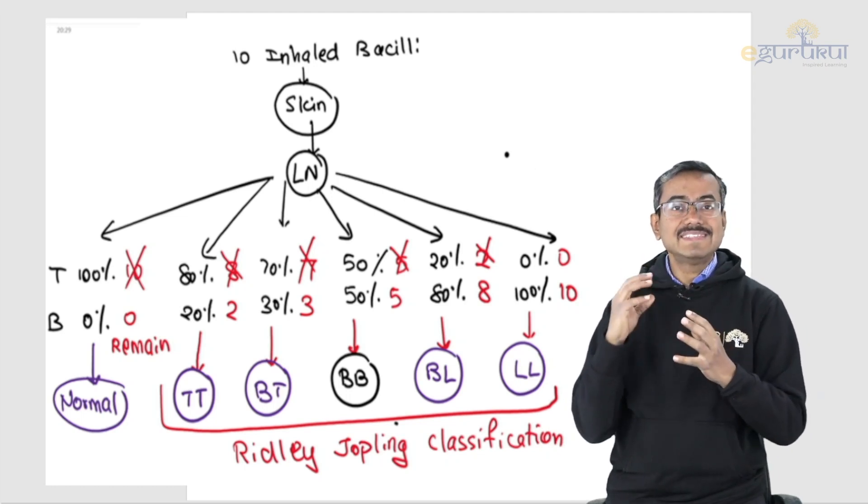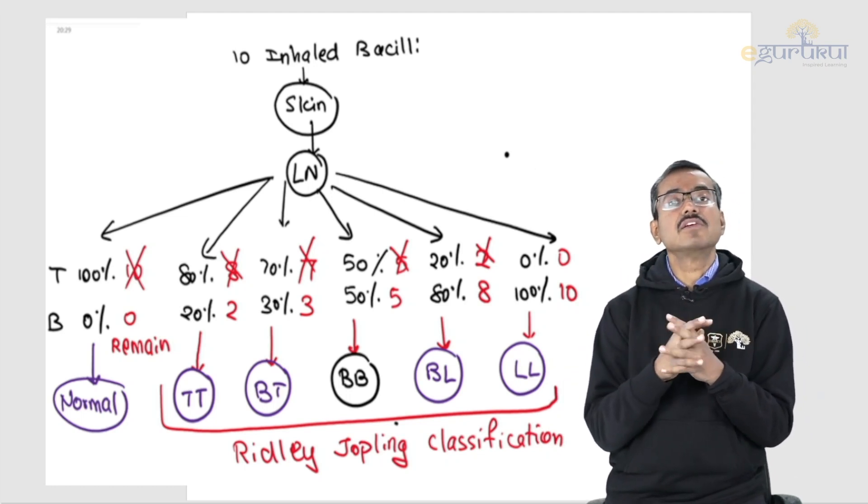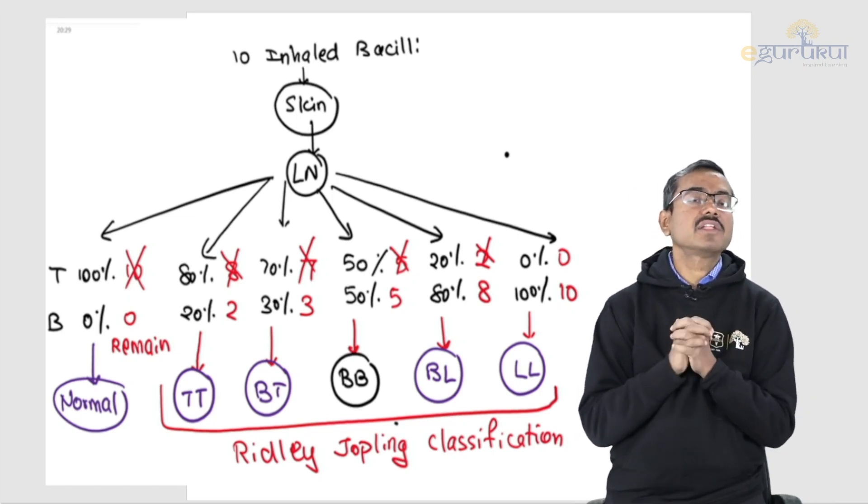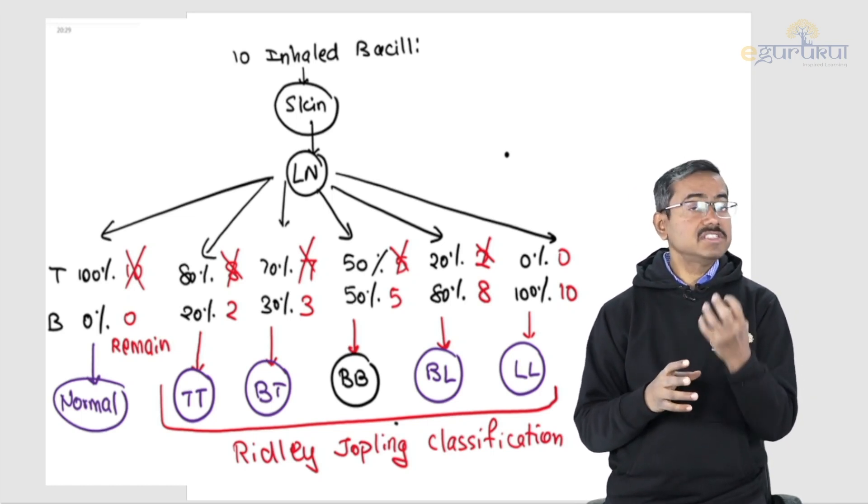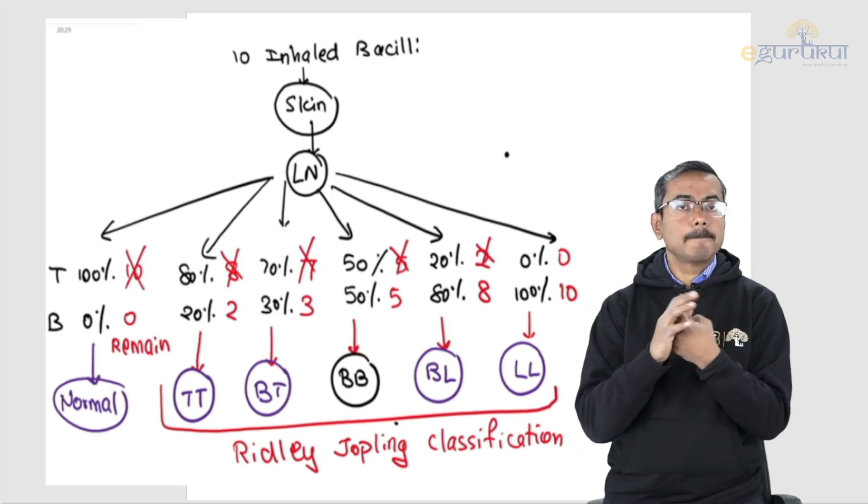You have to know from pathology that T cells can kill intracellular organisms. B cells cannot kill intracellular organisms. So that's why to kill leprosy which is intracellular you need T cells. B cells can't kill.